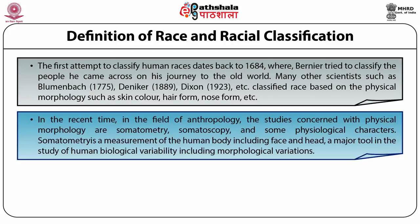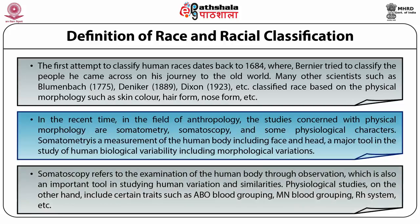Somatometry is the measurement of the human body, including face and head, and is a major tool in the study of human biological variability, including morphological variations. Somatoscopy refers to the examination of the human body through observation, which is also an important tool in studying human variations and similarities. Physiological studies, on the other hand, include certain traits such as ABO blood grouping, MN blood grouping, RS system, etc.